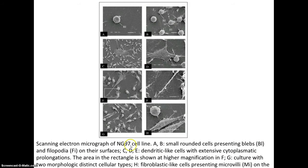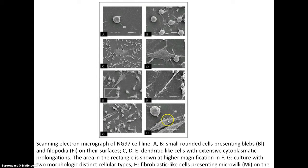With the cultured cells there are characteristic features: the small rounded cells presenting blebs and filopodia, and then the dendritic cells with extensive cytoplasmic prolongations. We see here, focusing in on the tip of one where it flattens out, and the area in the rectangle that we looked at. And then finally the spindle-shaped fibroblast-like cells with microvilli on their surface. We'll come back and revisit this — we seem to see the same population identified with the markers in your study.